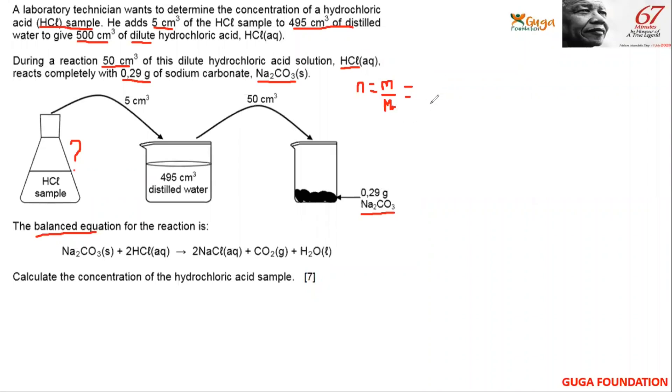So the mass is 0.29 grams divided by molar mass of sodium carbonate, which is 106 grams per mole, which equals, using a calculator, 2.74 times 10 to the negative 3 moles of sodium carbonate.